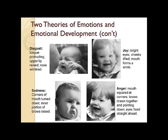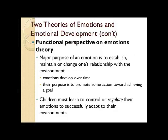The second theory is called the functional perspective on emotions theory. In this theory, it's believed that the major purpose of an emotion is to establish, maintain, or change one's relationship with the environment. Emotions are seen as developing over time, and the primary purpose of experiencing an emotion is to promote some action toward achieving a goal — in other words, they're looking at the functional aspects and purposes of emotion.